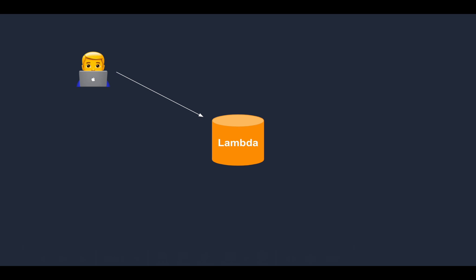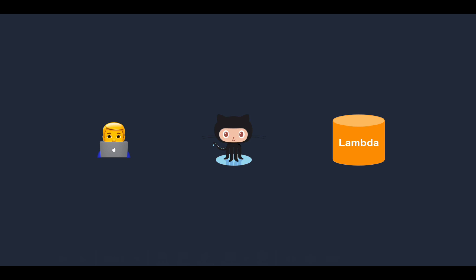There are many ways in which you can deploy a Lambda function, but what can be more convenient than simply pushing your changes to a GitHub repository and then having them automatically deployed to your Lambda function? In this video, we'll see how to use GitHub Actions to automatically deploy your changes whenever you push new code to your GitHub repository.